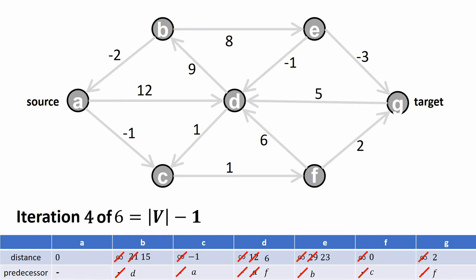Iteration 3 is done. In iteration 4, I look at all edges and no updates are performed. Since no updates were performed in iteration 4, we can terminate the algorithm now. Because no values in the table have changed, we will not perform any updates in iteration 5 or any later iteration. If no updates are performed in an iteration, the algorithm is done, and the values in the table already give us the shortest paths from A to every vertex.